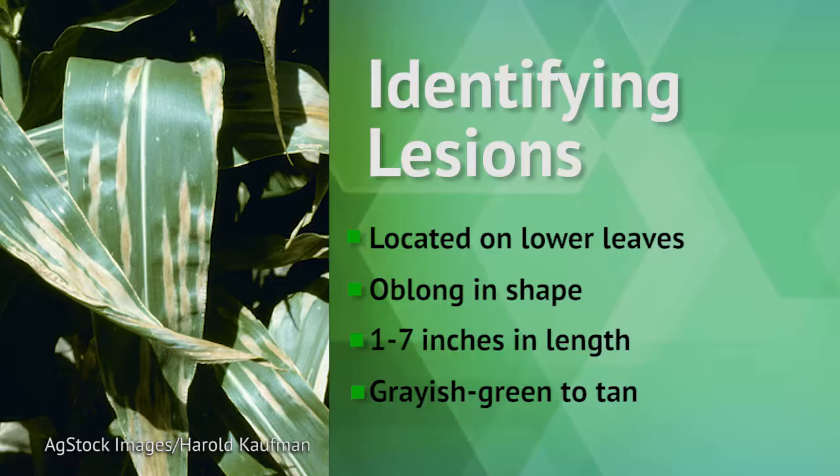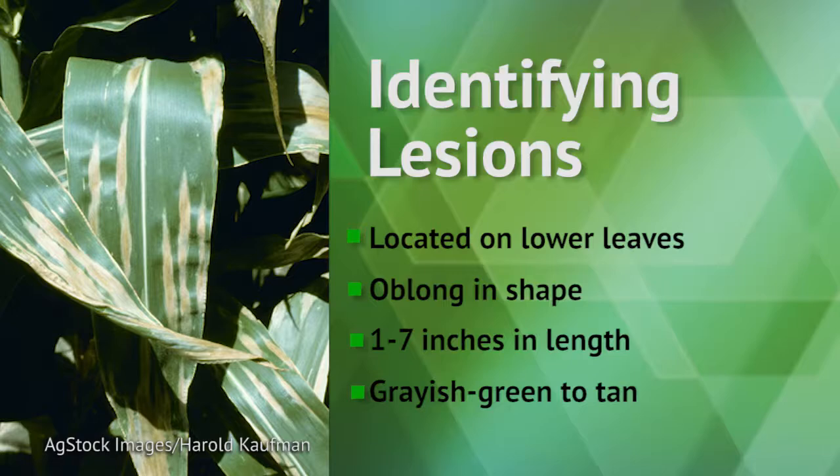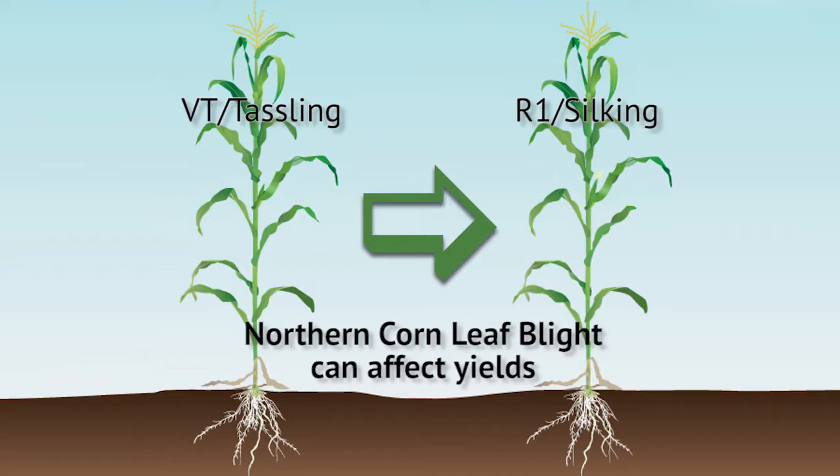The lesions spread to other corn foliage, including husks, as the disease progresses. When leaves are covered with multiple lesions, they will look brittle and gray-green in color, similar to how a killing frost would appear.